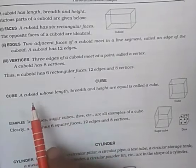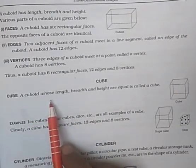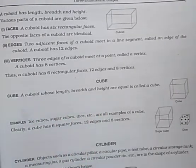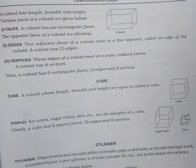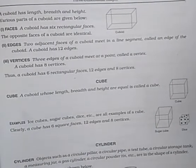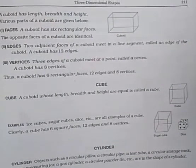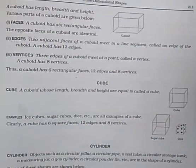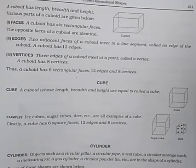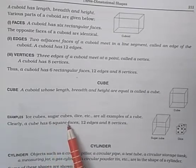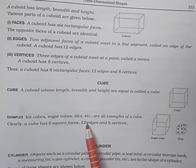A cuboid whose length, breadth, and height are equal is called a cube. For example: ice cube, sugar cube, dice, etc.